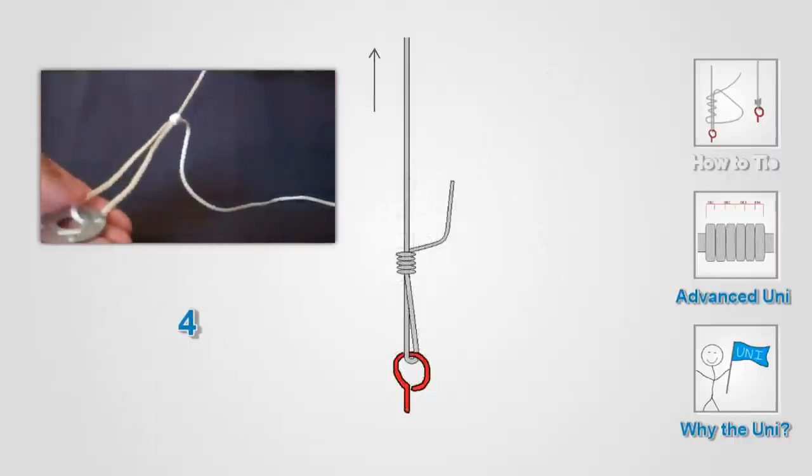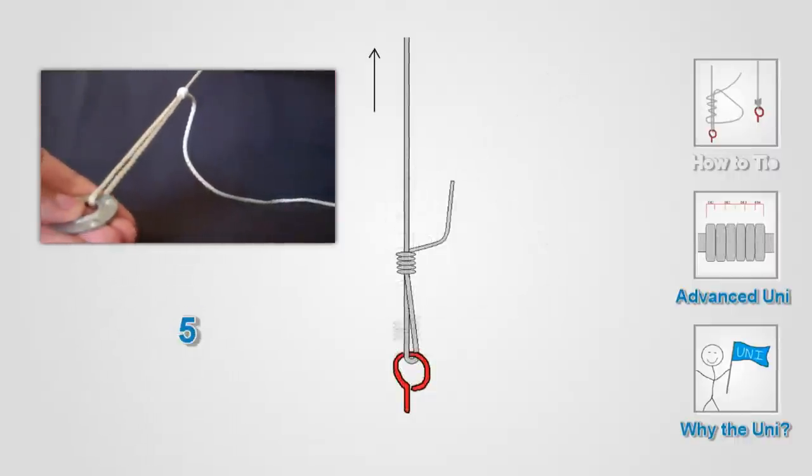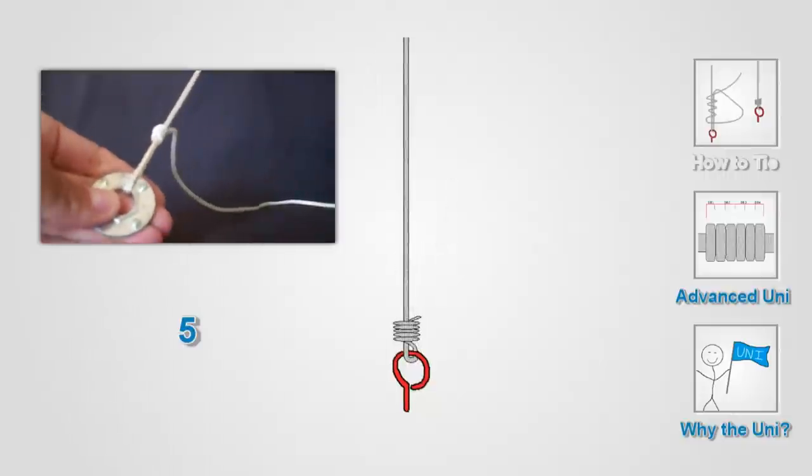Finally, pull the main line to slide the knot down to the eye of the hook. Alright, so that is the Uni Knot.